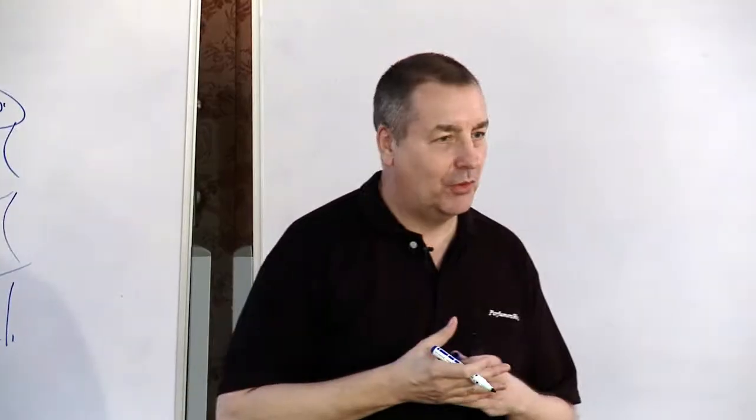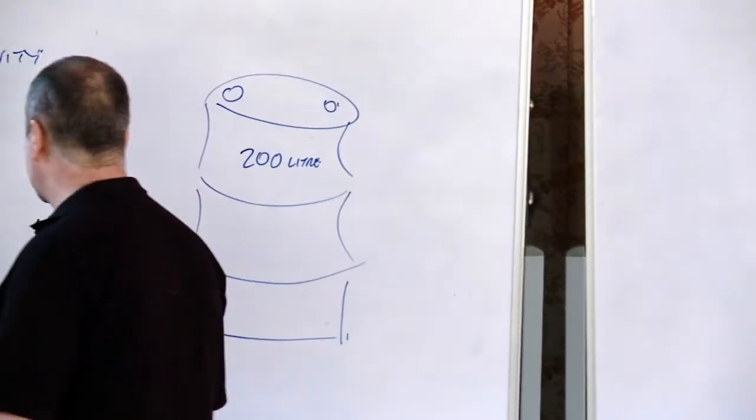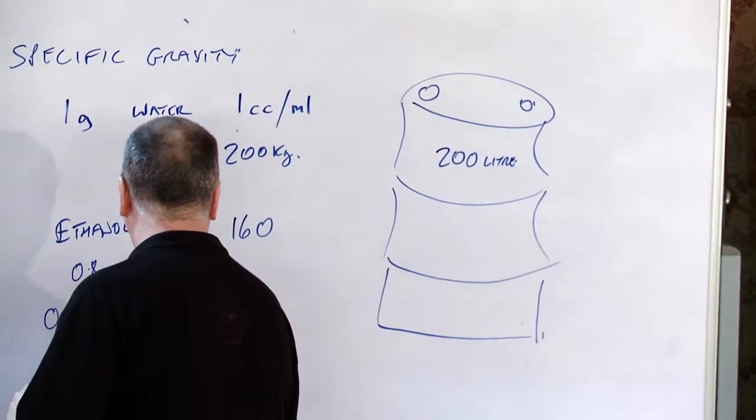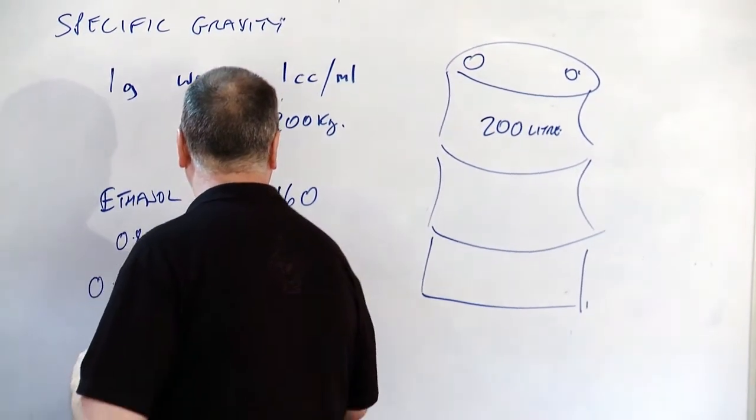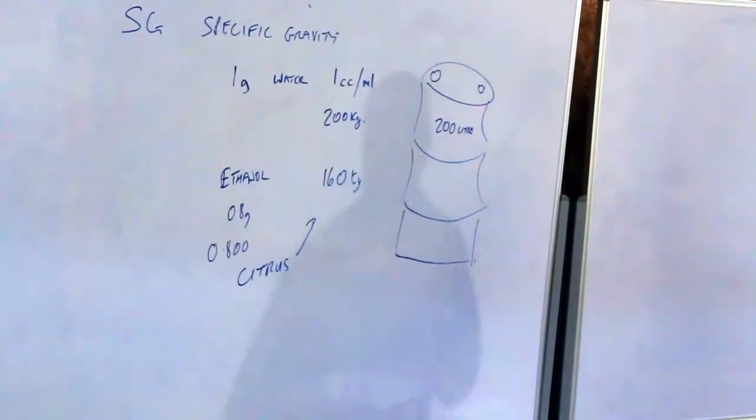And, for your information, many citrus oils are around about the 0.8 as well. So, generally when we buy citrus oils, if we have a drum, we can only get in 160 kilos.